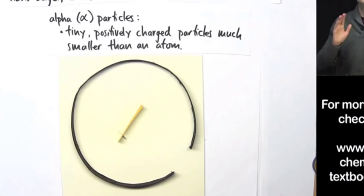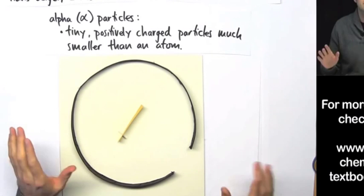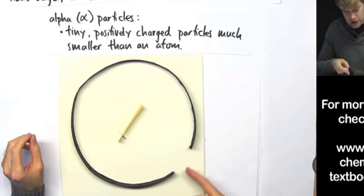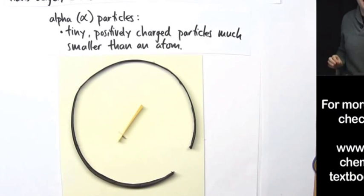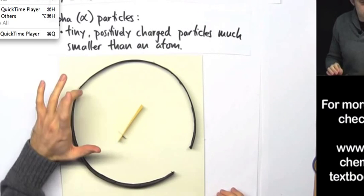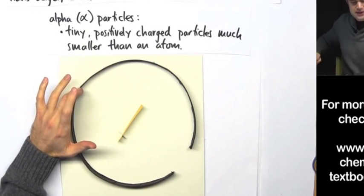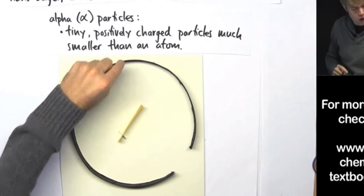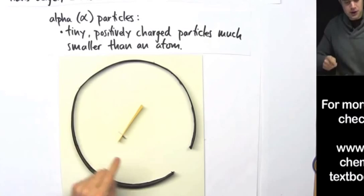The second thing is a really huge surprise. When they shoot the alpha particles, every once in a while, they don't see a flash here. Instead, they see a flash over here, or a flash over here, or sometimes a flash here or here.